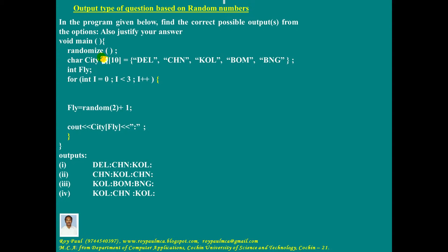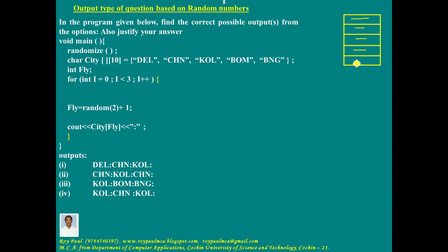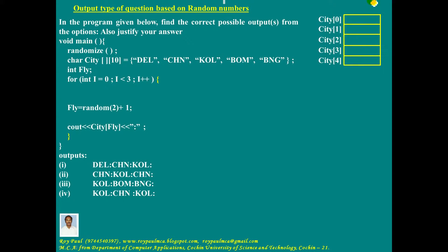Let me allocate memory for five rows. Memory can be allocated like this — these are the five rows: row one, two, three, four, and five. Let me name these rows. The name of the two-dimensional array is city, so the first row is city[0] because index starts with zero. Second one is city[1], city[2], city[3], and city[4]. You can see all the rows are named.